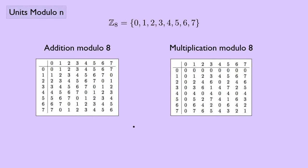Now, one thing we noticed is that addition modulo 8 formed a group. If we look at this table, it meets the conditions for a group: it's closed, associative, there's an identity element, and an inverse.